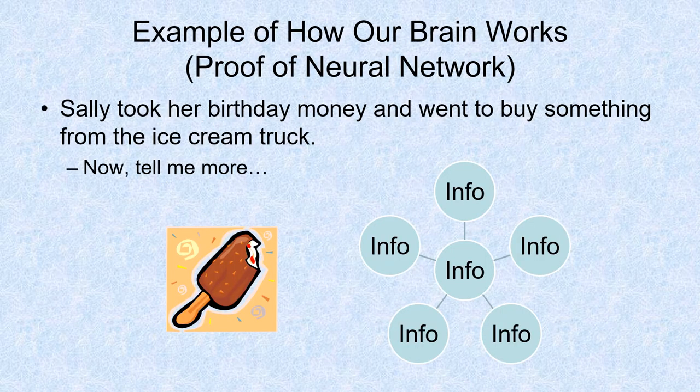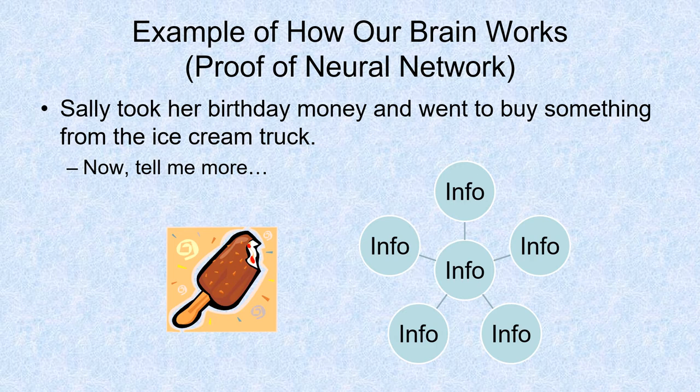Our students don't come to us as teachers with a blank slate — they all have existing neural networks. Let's prove that out. If I tell you that Sally took her birthday money and went to buy something from the ice cream truck, and then I asked you to tell me more, everyone individually would see a particular picture based on their own neural network. Think about: what age is Sally? How much money are we talking? What color is the truck? What does it look like? Are there sounds? What's the season? Everyone would answer these questions differently, because of what we already have built up in our neural networks.